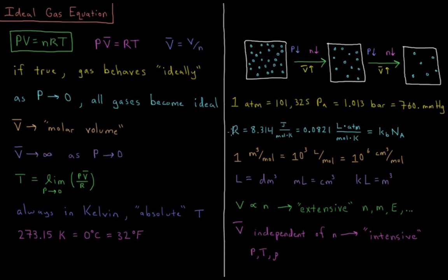The gas constant gives us things like the energy per mole of particles per unit temperature, whereas the Boltzmann constant is the energy per particle per unit temperature.